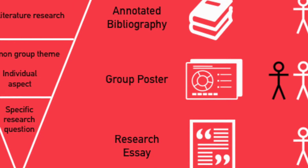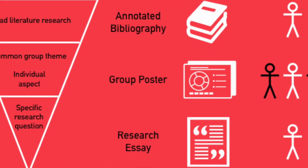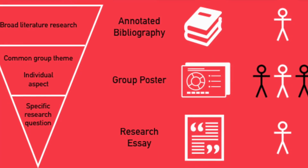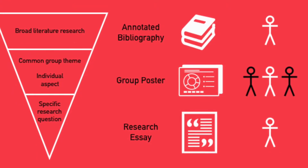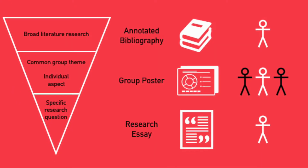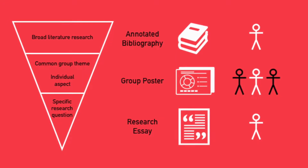In SEB 104 there are three major pieces of assessment that you will need to complete. Each of these assessment items are designed to work together to build up your skills in research and scientific communication, and to narrow your focus from a broad field of science to a specific challenge facing the world. These three assessment items are an individual annotated bibliography, a group poster presentation, and finally an individual research essay. You will use a variety of written, visual and oral communication styles across these assessment items to communicate your research into the field and what solutions are being developed.